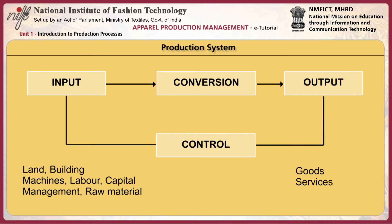This module discusses basic production processes. A production system is a system whose function is to convert a set of inputs into a set of desired outputs, depicted with the help of a chart. Inputs include land, building, machines, labor, capital management, and raw material. Examples of outputs are goods and services. A production system is a framework within which production activities of an enterprise take place.